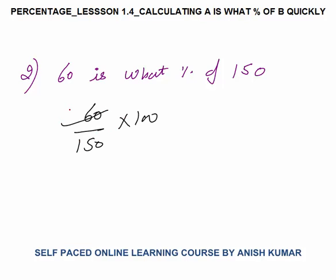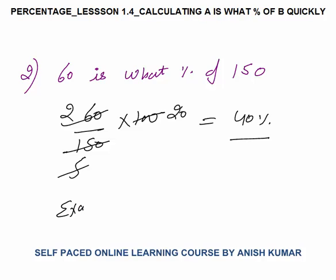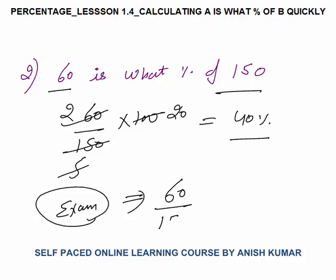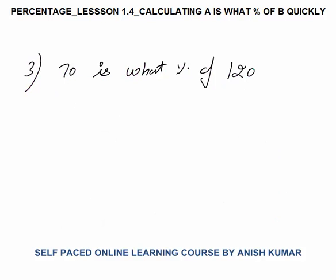Question 2: 60 is what percent of 150? This equals 60 by 150 multiplied by 100, which gives 40 percent. In exam, to solve faster, I simply calculate the fraction: 60 by 150 equals 2 by 5, and I know that 2 by 5 equals 40 percent.